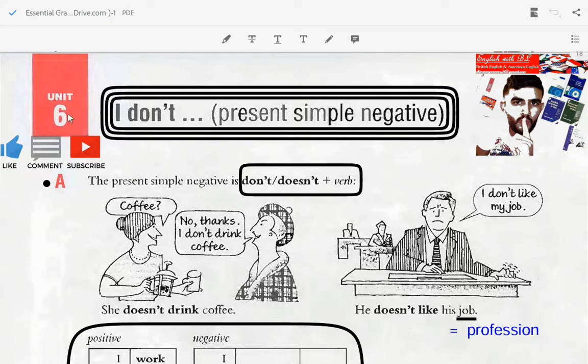In this unit, it's about the present simple negative: I don't. The present simple negative uses don't or doesn't plus verb. Don't or doesn't plus verb.